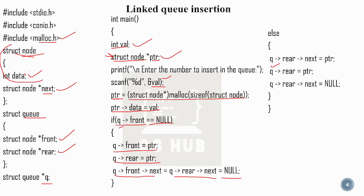This is the else case — when there is already one element and we're inserting at the end. The new node is linked into the next part. We set q.rear.next equal to PTR, then update q.rear equal to PTR. That same point — q.rear.next is set, and pointer next is equal to null. This completes the linked queue insertion.